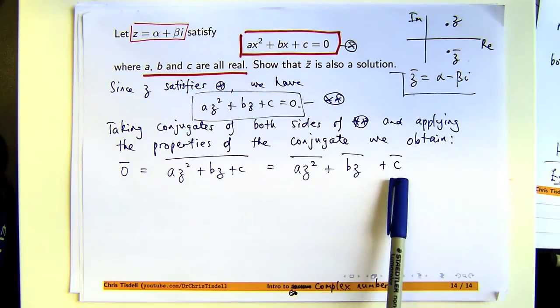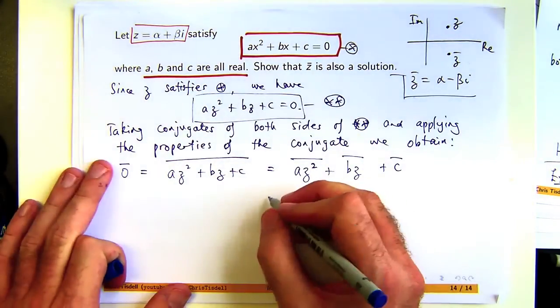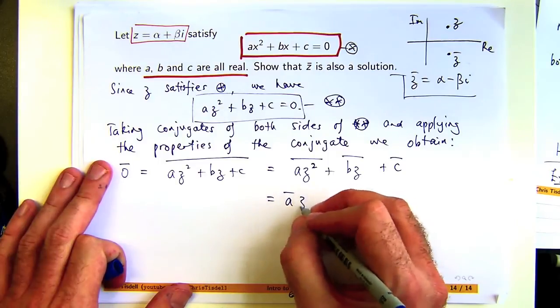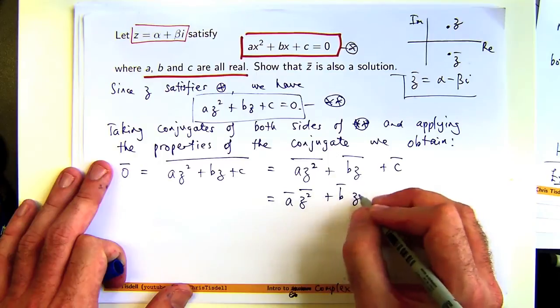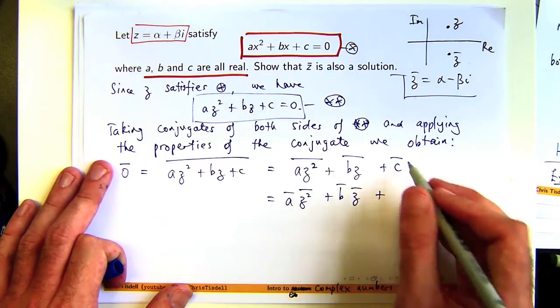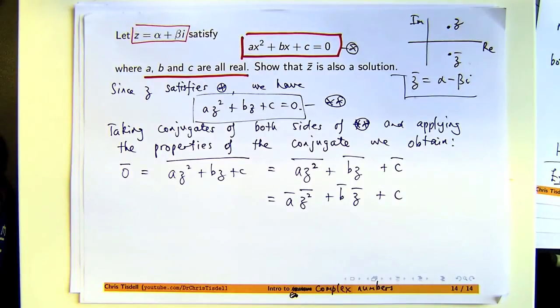I can even go a bit further now. Here I've got products and powers. The conjugate of a product is equal to the product of the conjugates. Now, the conjugate of a real number, c is real, remember, is just itself. The conjugate of a real number is just itself. So conjugate c is c.